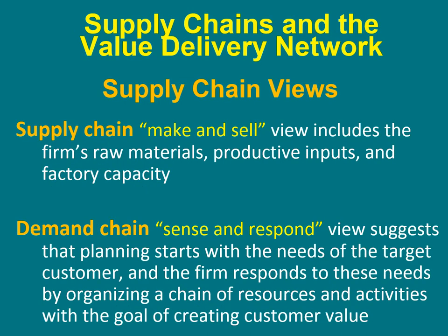It's a matter of two types of chain: supply chain and the value-driven network. The supply chain view — make and sell — includes the firm's raw materials, productive inputs, and factory capacity. The demand chain — sense and respond — view suggests that planning starts with the needs of the target customer as the firm responds by organizing a chain of resources and activities with the goal of creating customer value.